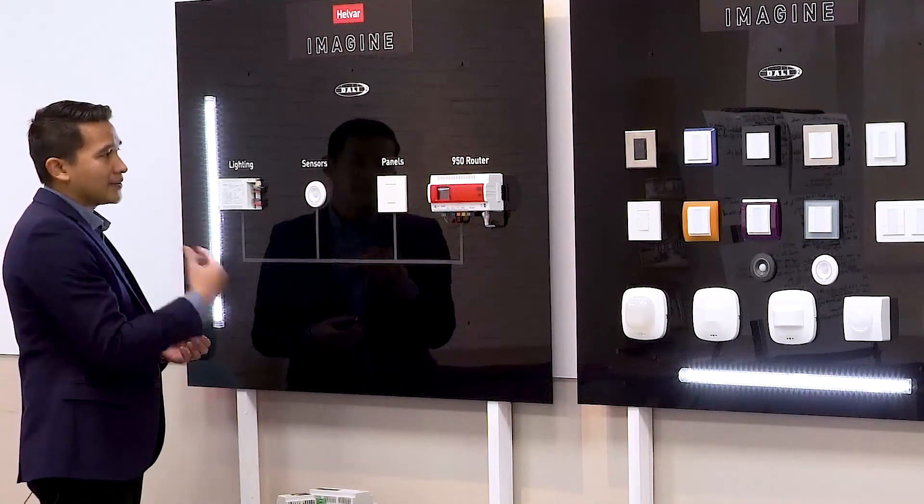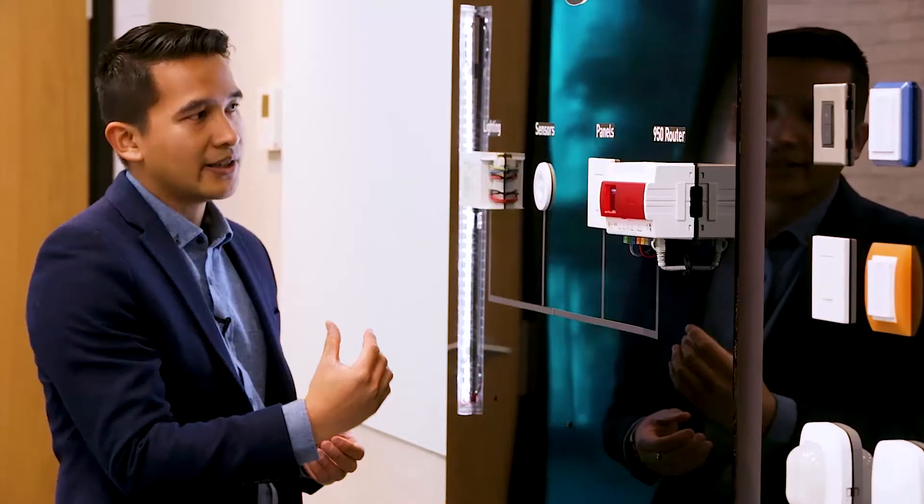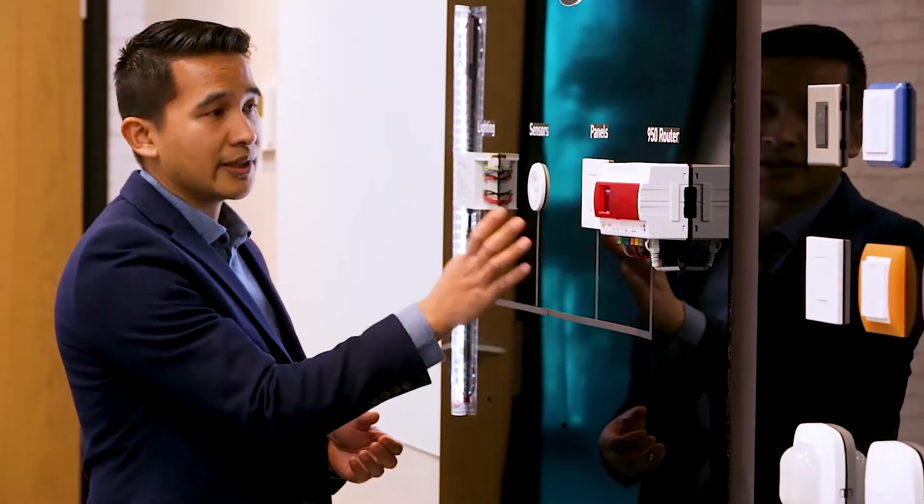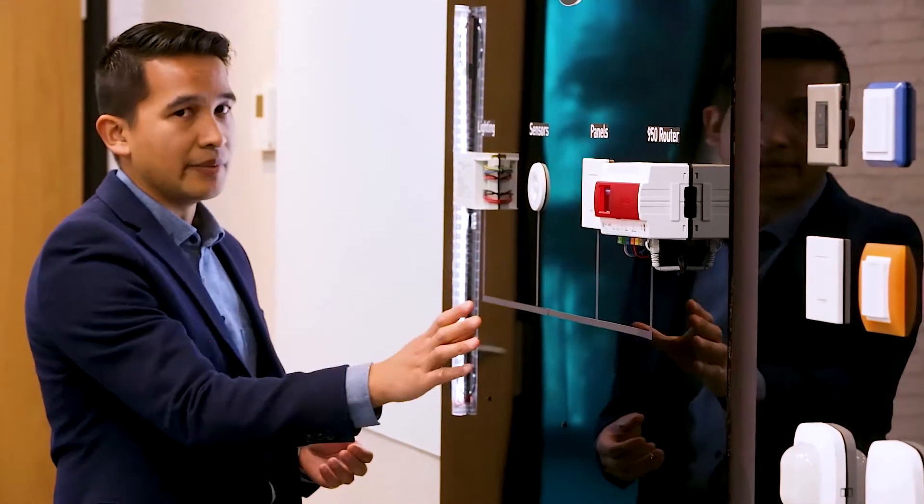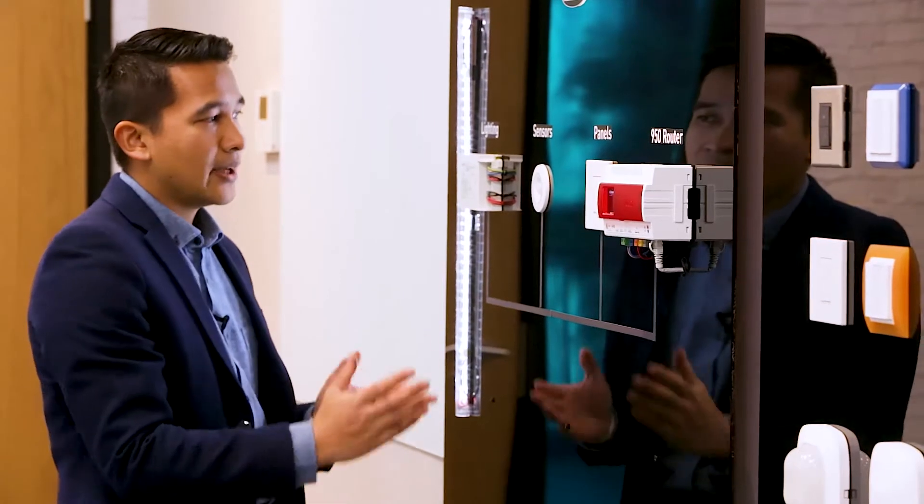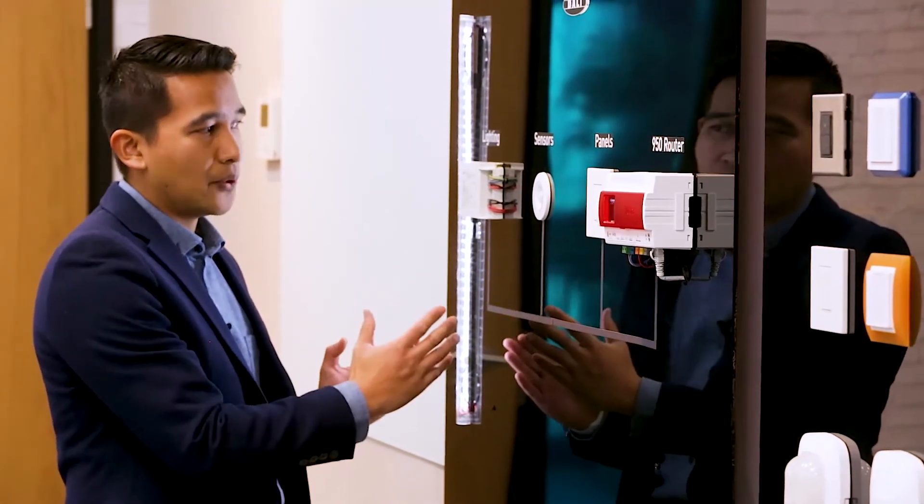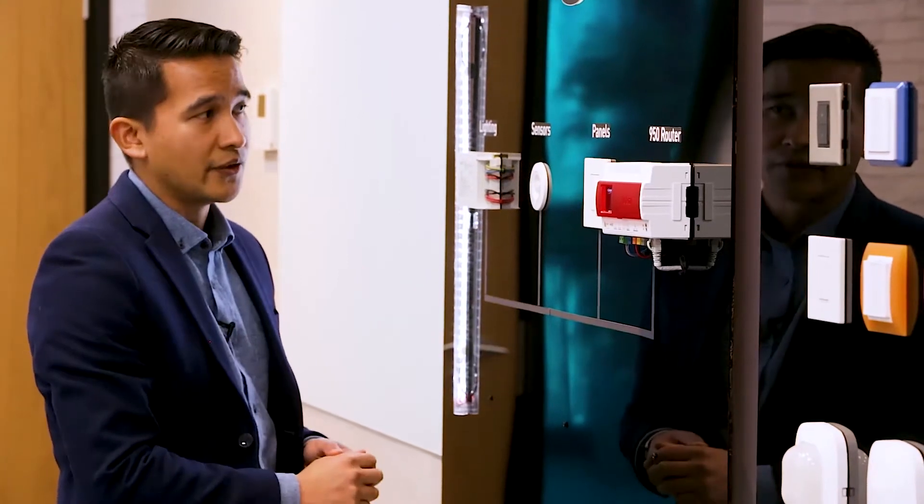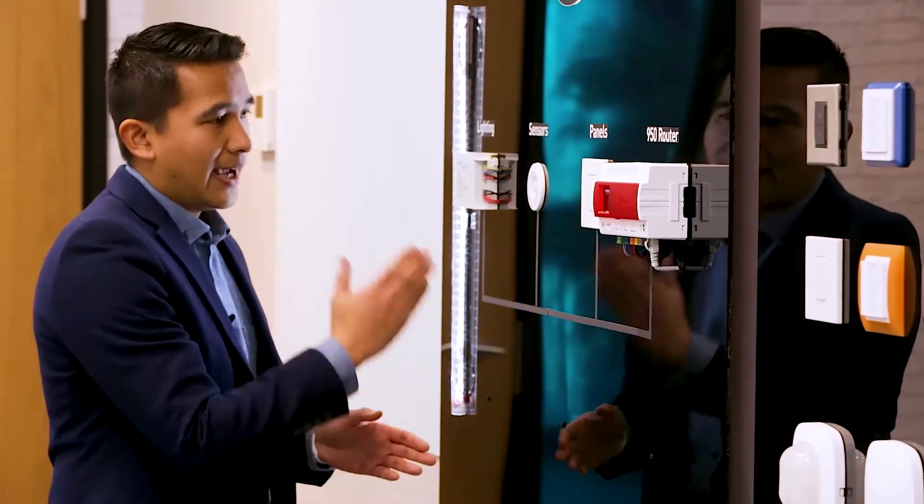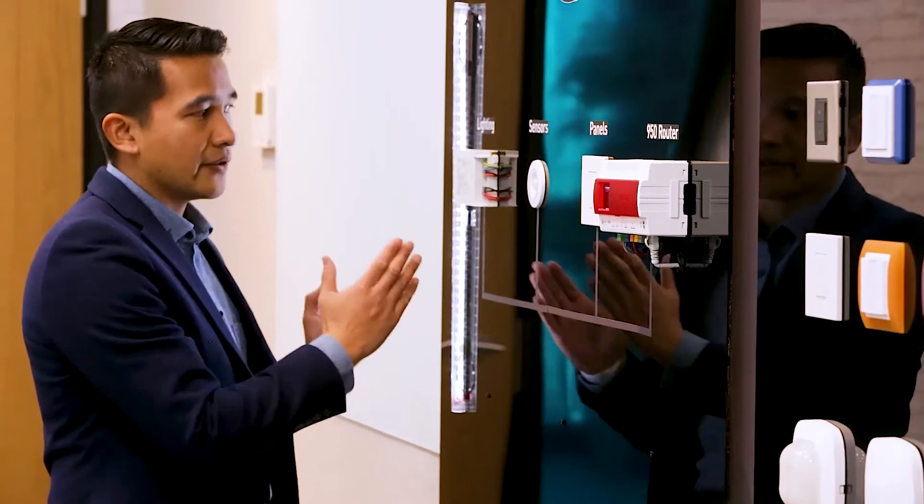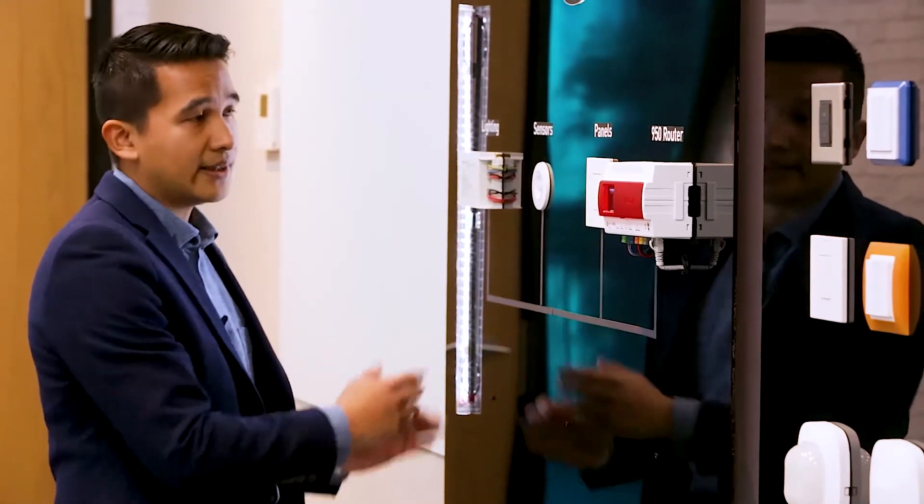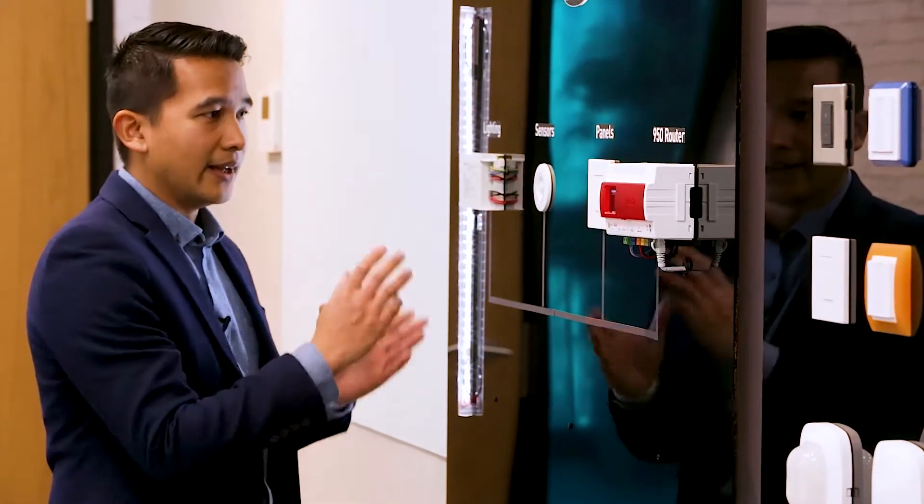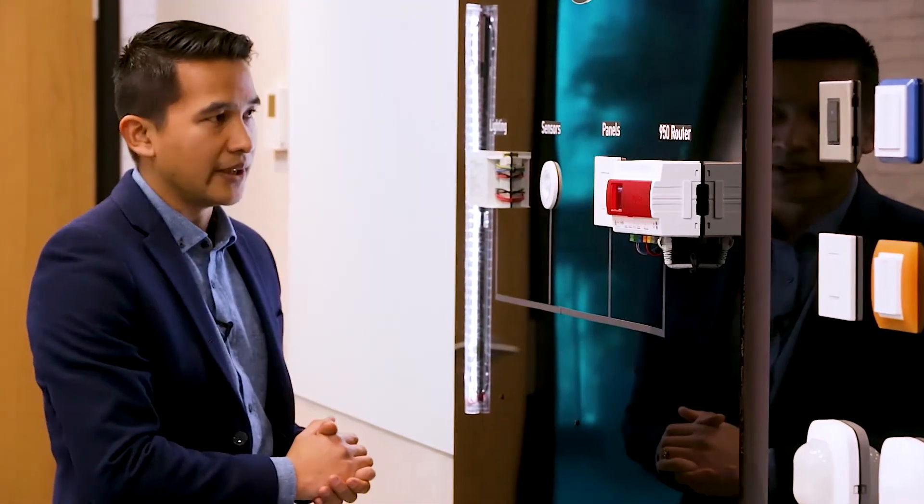One thing that has been added with DALI 2 is an additional 64 addresses for lighting controls products or lighting control devices on the same network. So essentially now you have a software limit of 64 addresses for your control products. And it is a hard division here of 64 and 64. You cannot have 65 lights and you cannot have 65 sensors and panels.